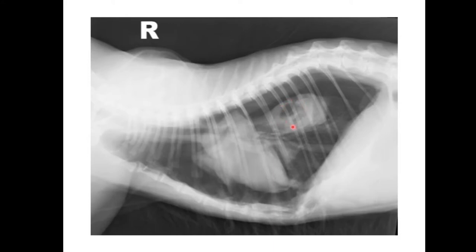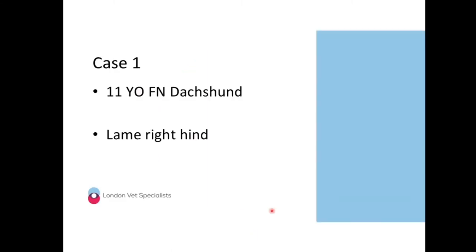The suspicion is that another one of these bullae has ruptured, resulting in this cat developing this large volume pneumothorax. That's a little example for you guys, which effectively brings us on to case number one — an 11-year-old female neutered dachshund that's presented to you as being lame on its right hind. At this point I'm going to open up the floor and invite one of you to share your feelings about case number one. Would anybody like to take case number one?